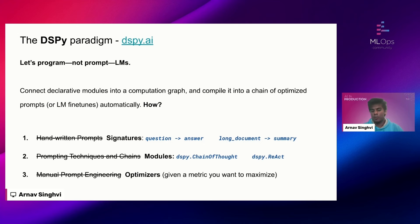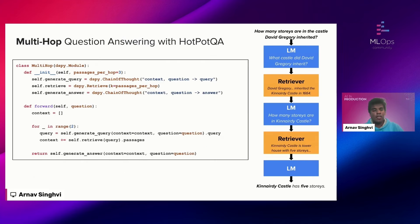Optimizers reduce the need for manual prompt engineering by simply asking you to input a DSPy program, a few examples, and a metric you'd like to maximize. The optimizers then internally do the work for you and produce an automatically optimized prompt which you can apply during inference to obtain enhanced performance.